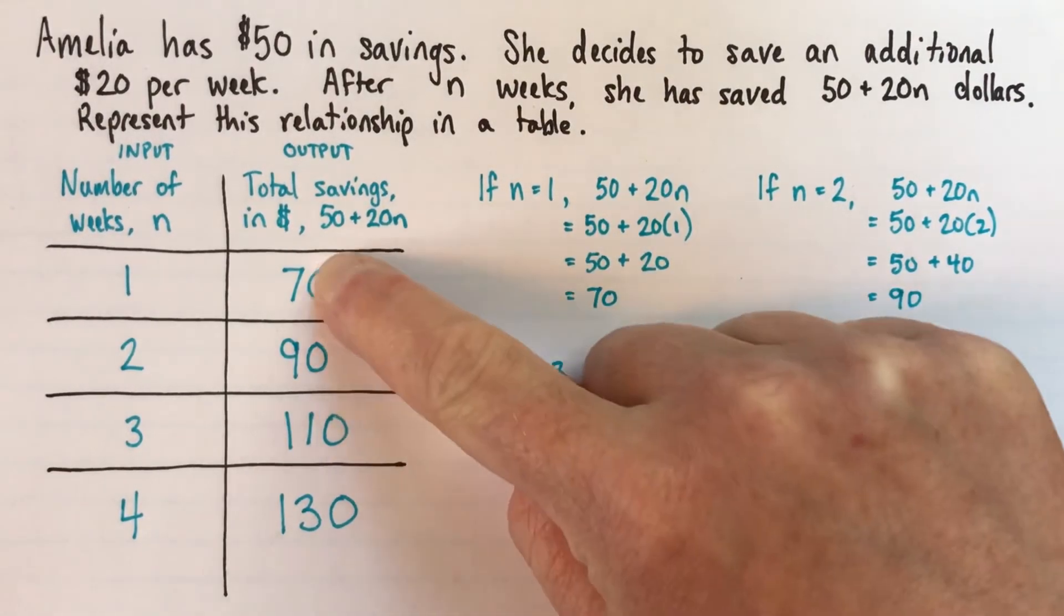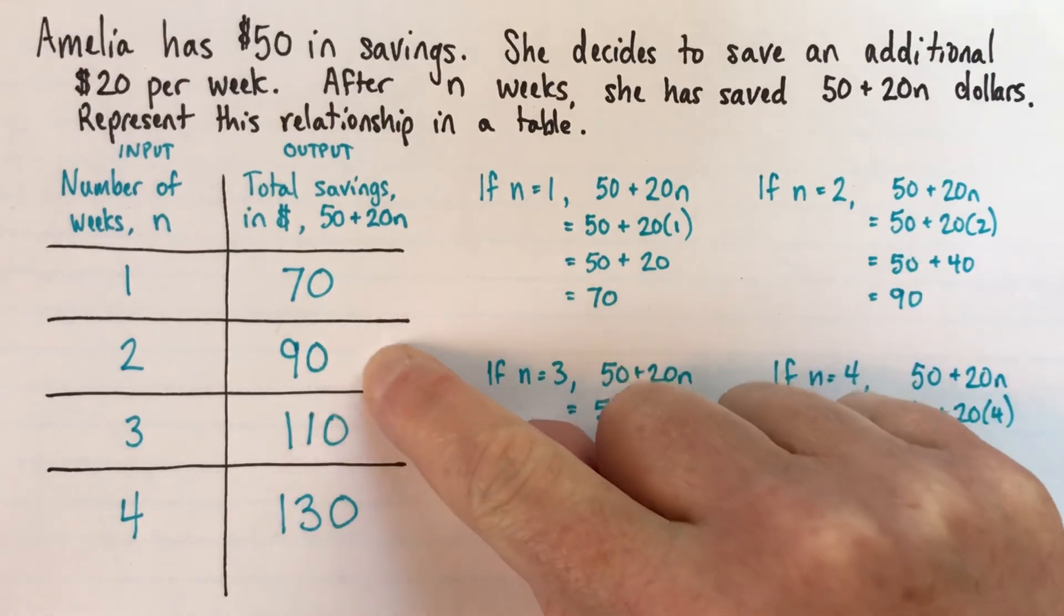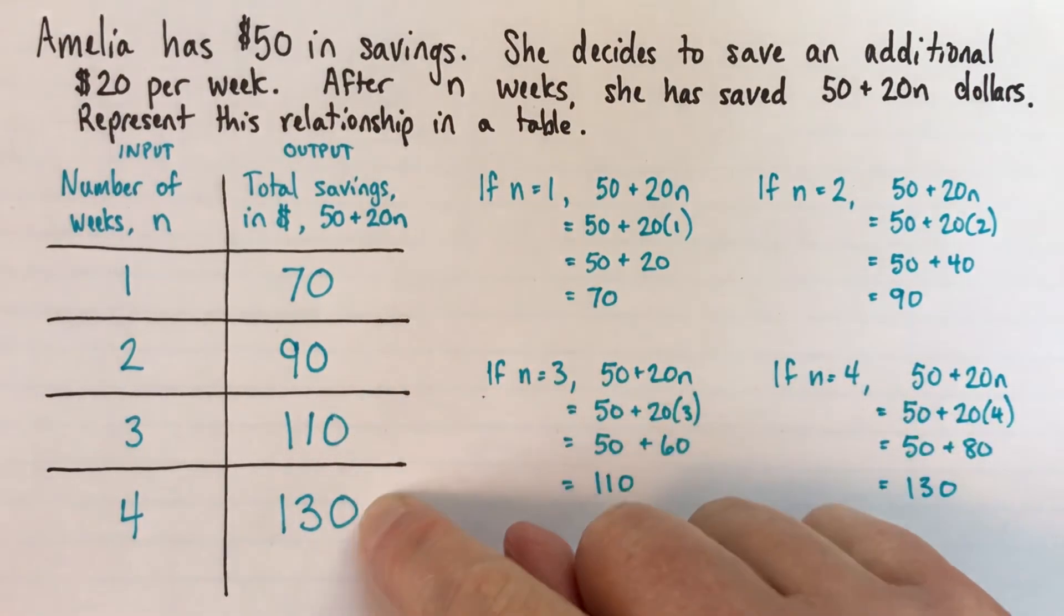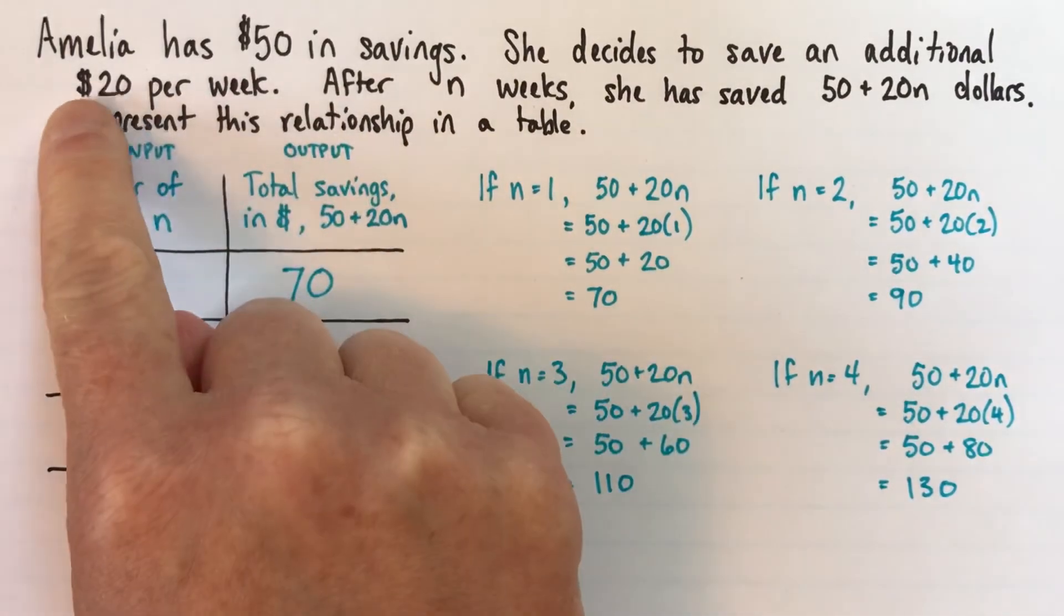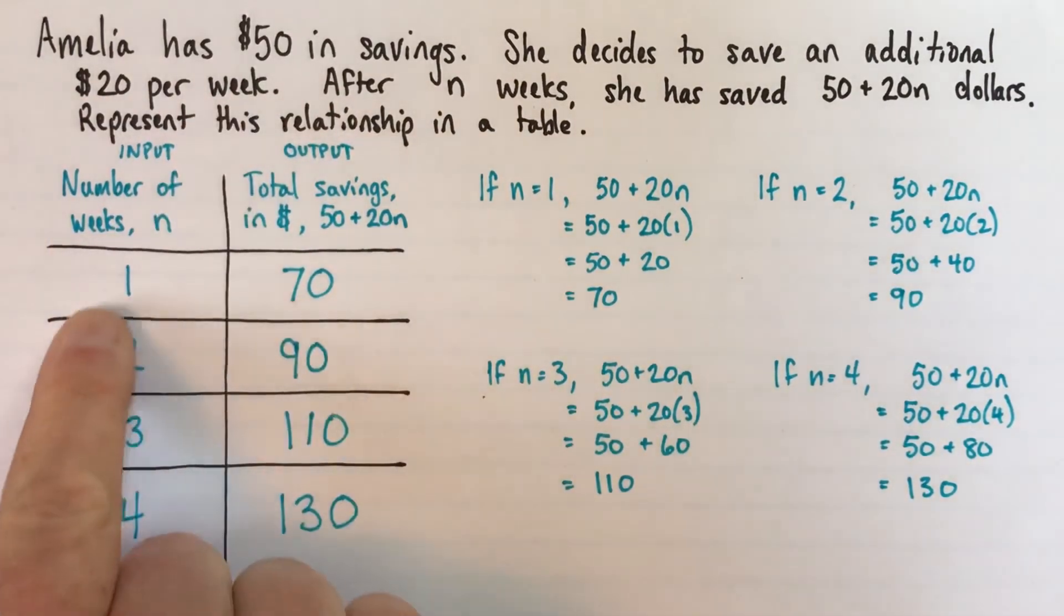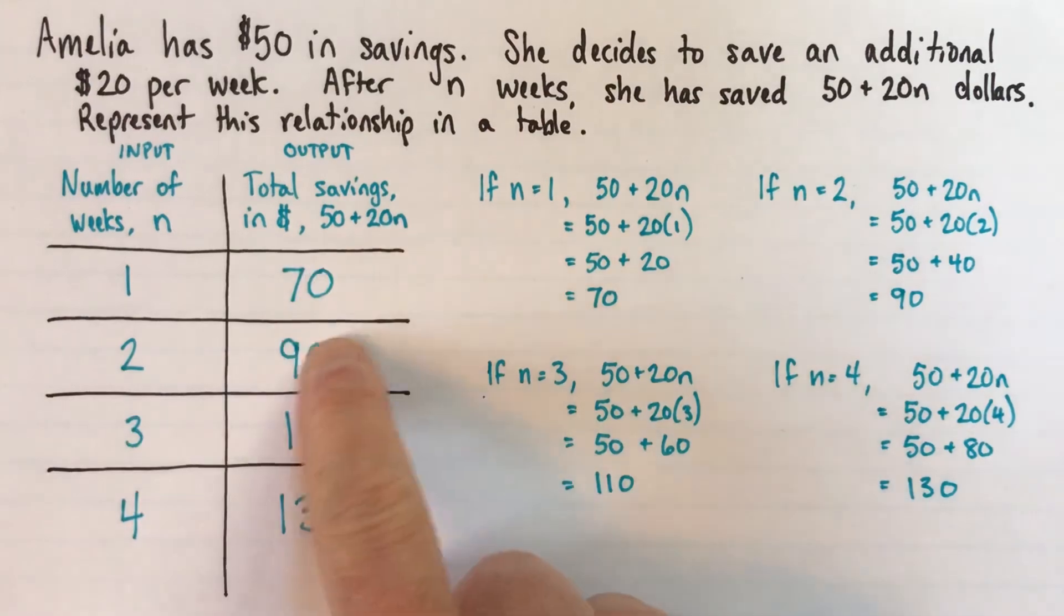So 70 plus what is 90? So that's plus 20, and then plus 20, and then plus 20 again. So this is a good sign. And if we go back to the problem, it makes sense because she's saving $20 a week. So every time another week goes by, she's got 20 more dollars.